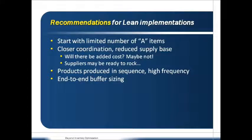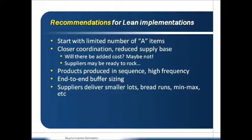Some of the specific tactical supplier things include having suppliers deliver in smaller lot sizes, in predictable frequencies like bread runs to specific spots on the manufacturing floor, and doing Kanbans or min-max for replenishment. On the manufacturing side, the rhythm wheel concept is fairly critical — you're producing far more frequently but also with a fixed order in production. To support that, you need end-to-end supermarket sizing or buffers in place. In terms of the planning process, you need daily planning plus the usual weekly APS planning. You also need new KPIs — for instance, daily schedule attainment or rhythm wheel schedule attainment. These are all new things to measure, and some existing KPIs may have to change slightly.